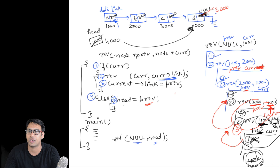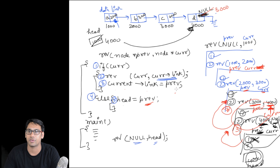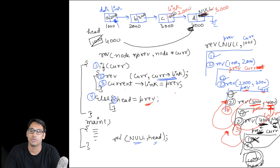In the previous recursive call, previous is storing 2000 and current is storing 3000. We execute line 3: current.link = previous. That means the link part of the current node will now store whatever previous holds. Previous is storing 2000, therefore this link part will now be storing 2000. So this node is pointing to the 3000 location and that node is pointing to the 2000 location.